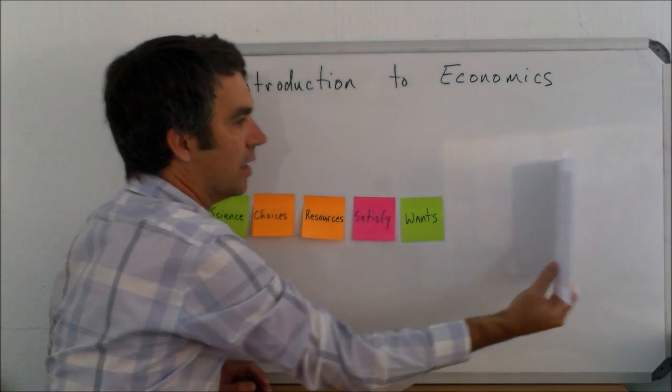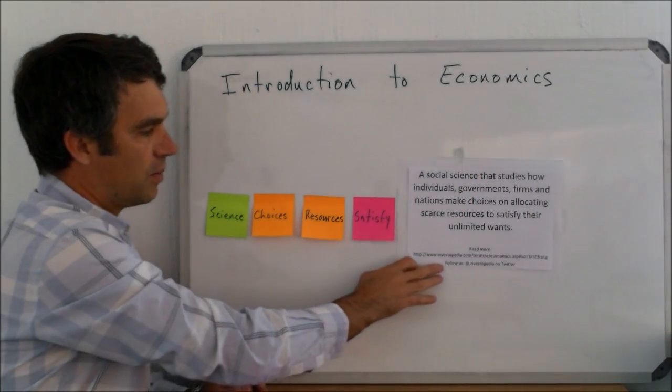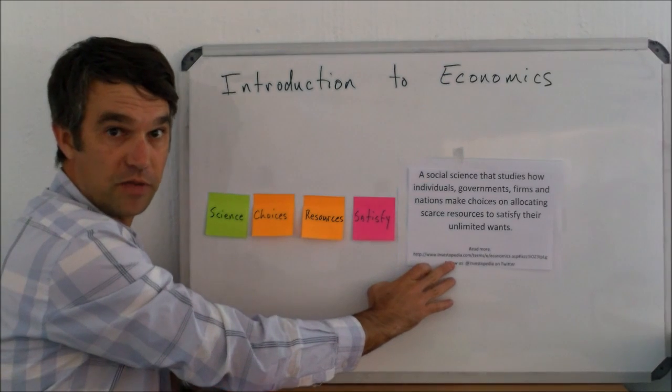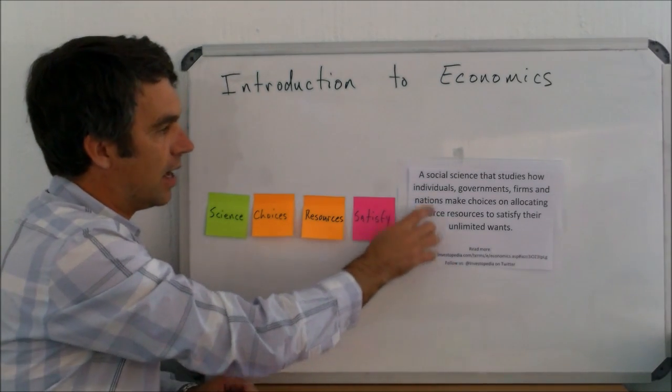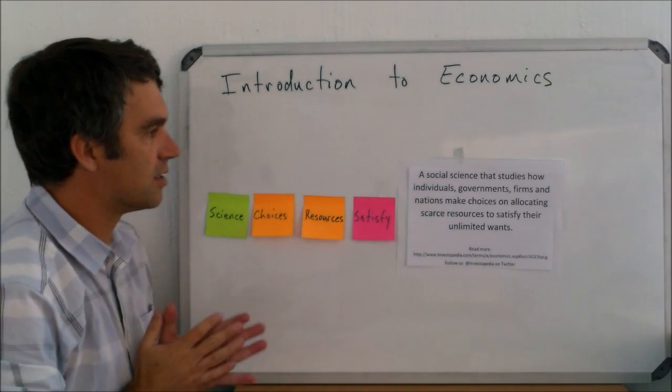So, let's see how we did. This is from Investopedia, which is a good site if you want to just find definitions. And they say a social science that studies how individuals, governments, firms,